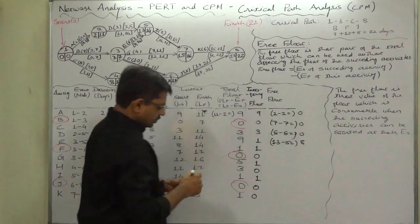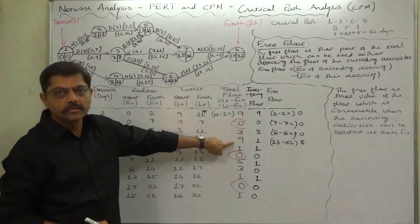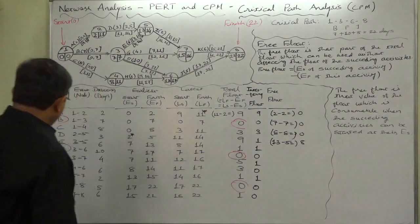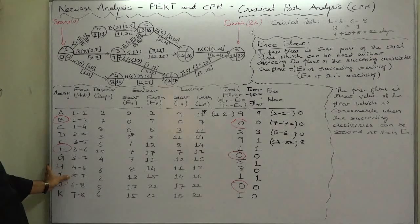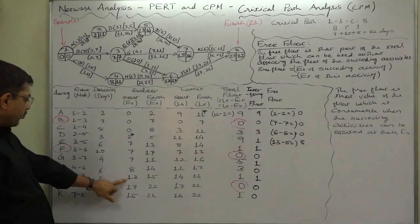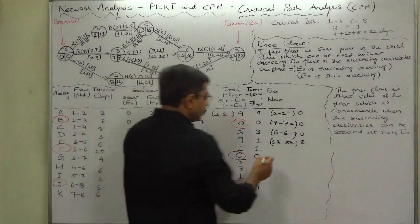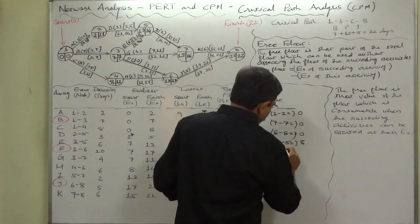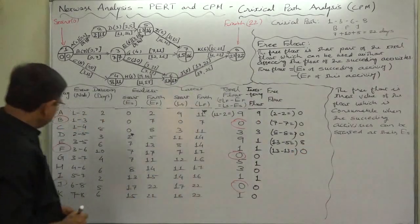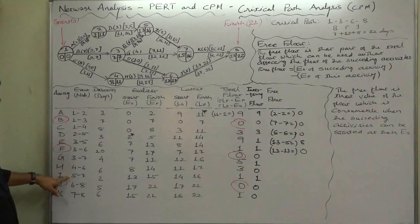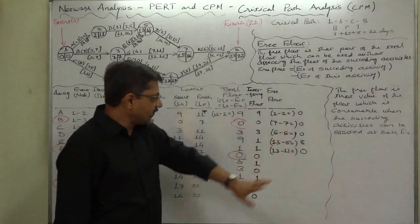Note that the total of these values doesn't exceed the total float. For activity E, the succeeding activity is I. The earliest start time of I is 13 and the earliest finish time of E is 13, so 13 minus 13 equals 0. Note that I is a common successor of D and E, but the floats are different.